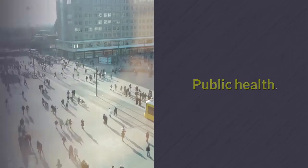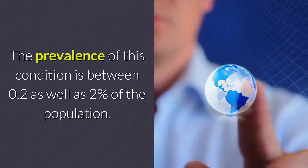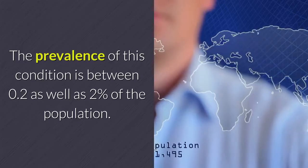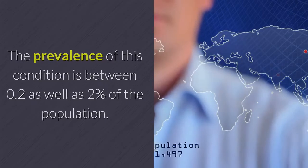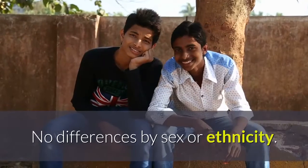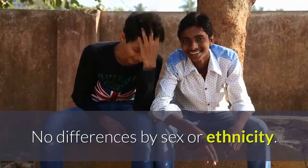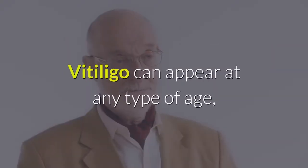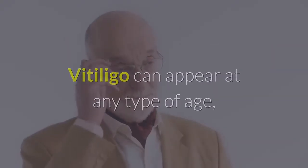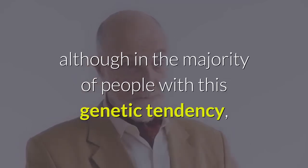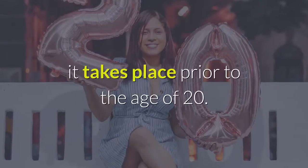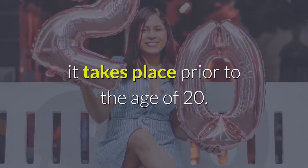Regarding public health, the prevalence of this condition is between 0.2 and two percent of the population, with no differences by sex or ethnicity. Vitiligo can appear at any age, although in the majority of people with a genetic tendency it occurs before the age of 20.